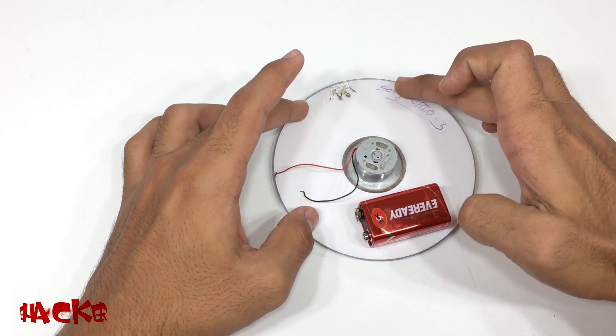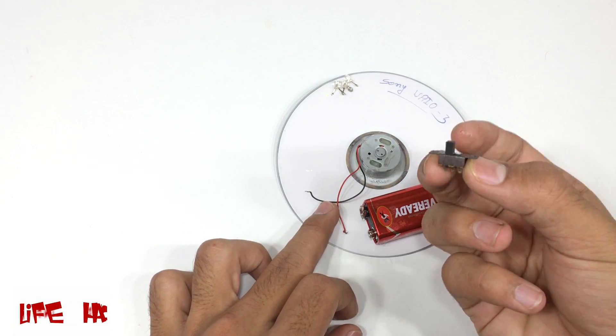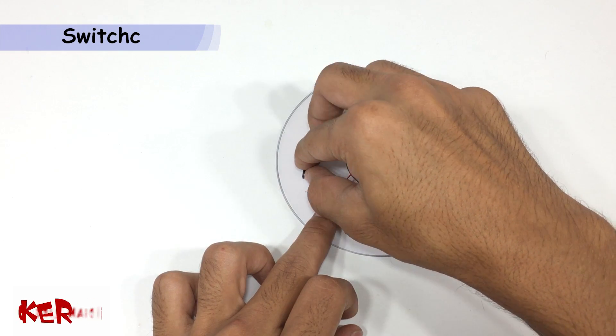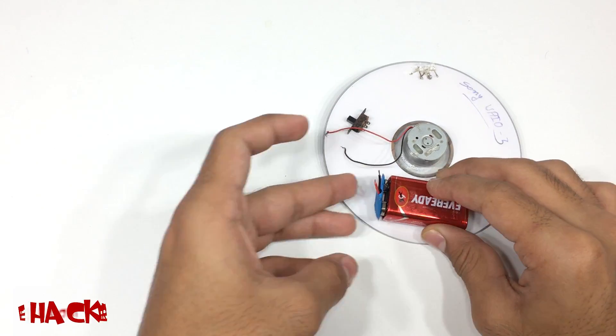This is a 9V normal battery and a normal switch. Now connect all these in parallel.